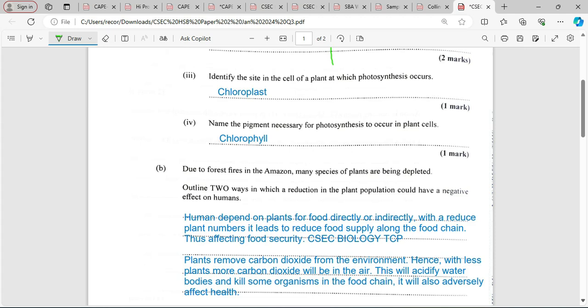It might not be directly for humans, but what about the herbivores along the food chain, thus affecting food security. If we have a reduction in plants, we're going to have a reduction in food supply at some part of the food chain, which will affect our food security.